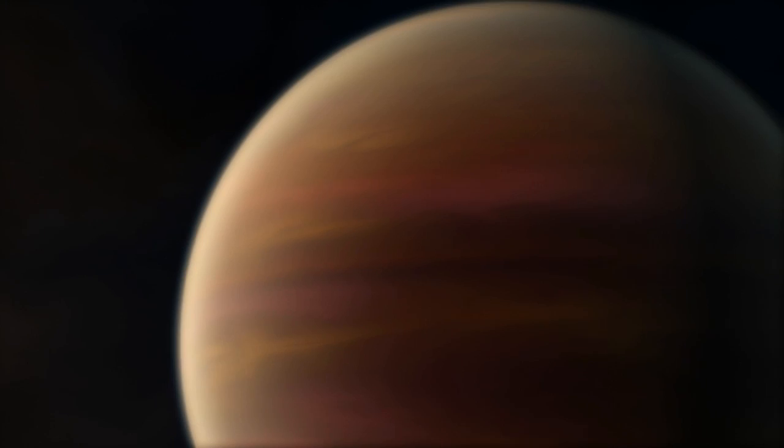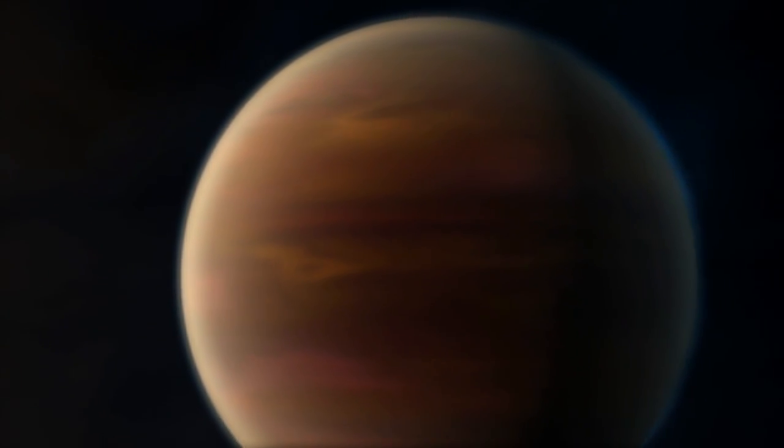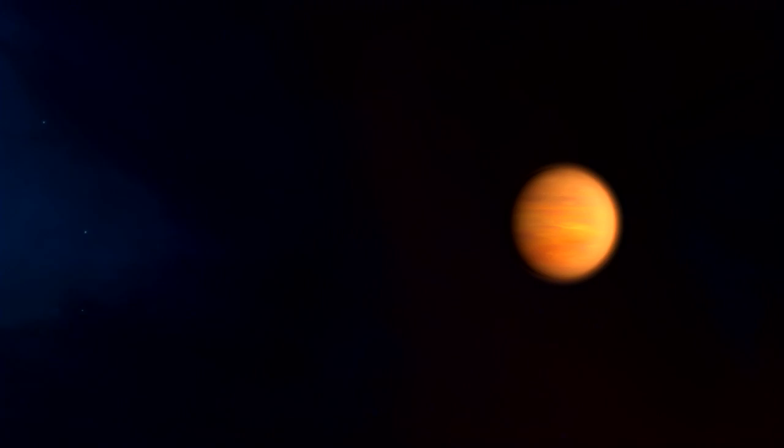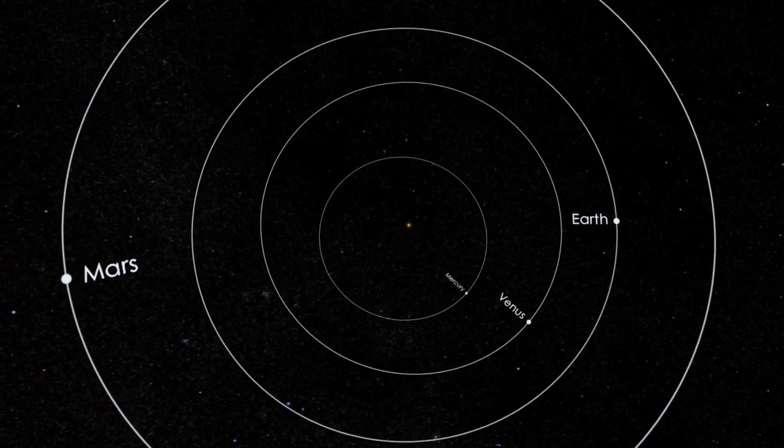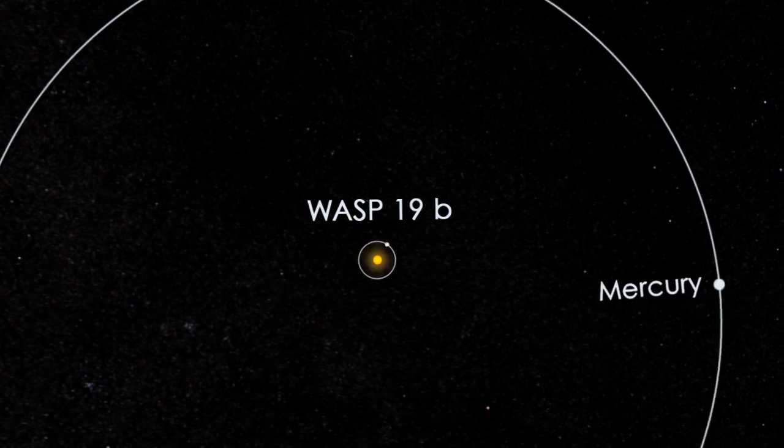Recent studies suggest that exoplanets and their atmospheres come in a wide variety. At one extreme are hot Jupiters like WASP-19b, a boiling gas giant that orbits its star far closer than Mercury orbits our sun.